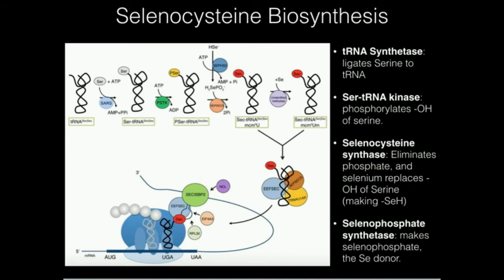There's another reaction — a side reaction that leads into the synthesis. It's this enzyme down here, selenophosphate synthetase. It takes inorganic selenium and turns it into selenophosphate. It's still inorganic, selenophosphate, and the selenophosphate is going to be the selenium donor in the next reaction, which is shown down here.